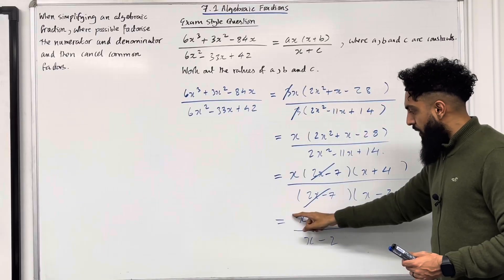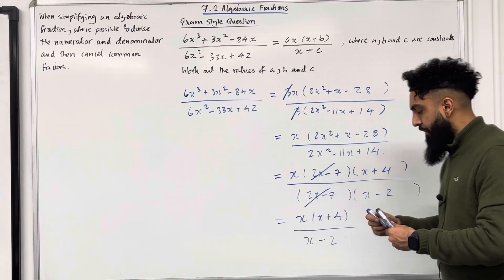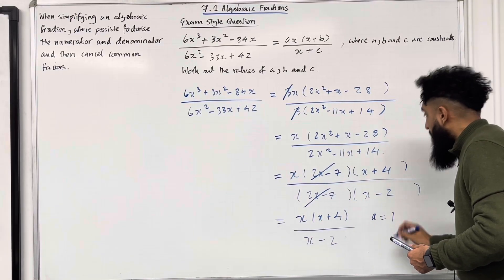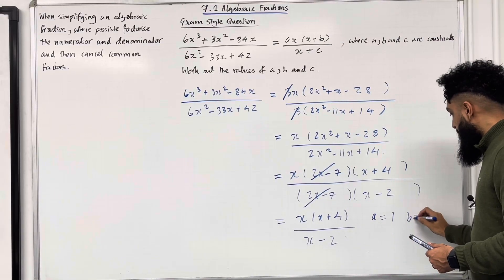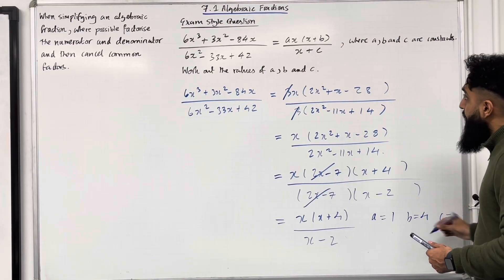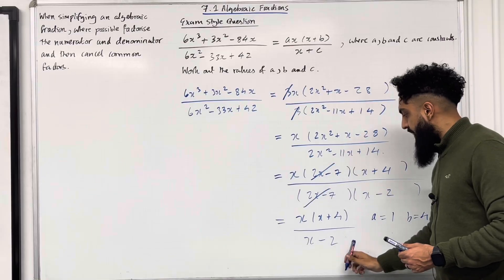a will just be coefficient of x over here, which is 1. The b will just be 4. And the c will be negative 2.